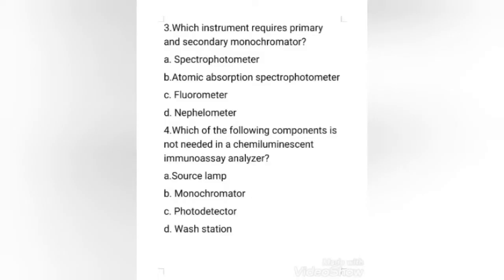Third question: which instrument requires primary and secondary monochromator? Options: spectrophotometer, atomic absorption spectrophotometer, fluorometer, or nephelometer. The right answer is option C, fluorometer.